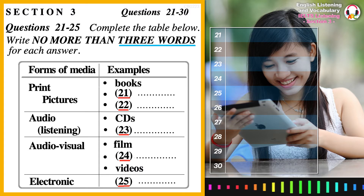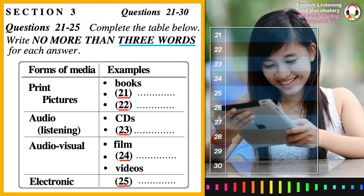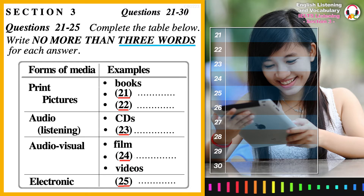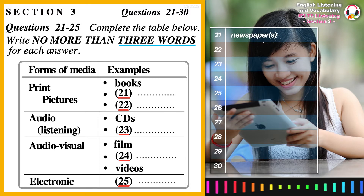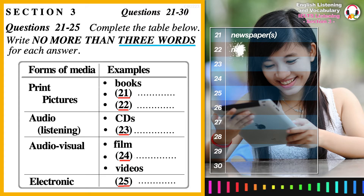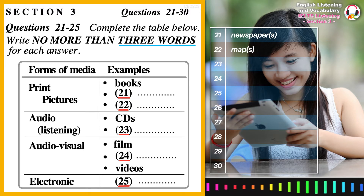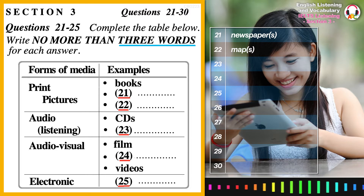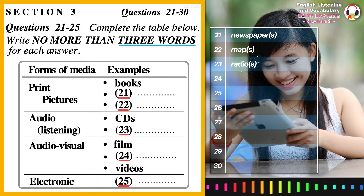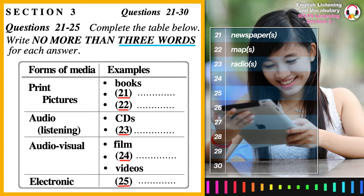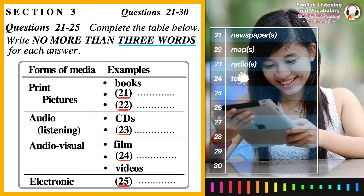Maybe we could draw up a table and look at examples of each medium in turn. The different forms of media would be the print media — things like books and newspapers, that sort of thing. Included in these are the pictorial forms of print media, like maps. Maps are really just formal pictures, aren't they? And then there are the audio forms of media, where children can listen. CDs and radios are probably the best examples, because a lot of children have access to these, especially radios. And this would lead into the audio-visual media, which can be seen as well as heard — film, television, and we mustn't forget videos.